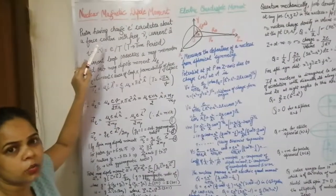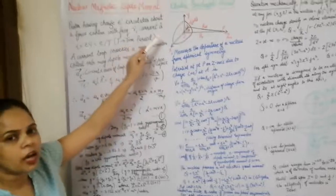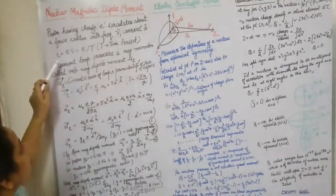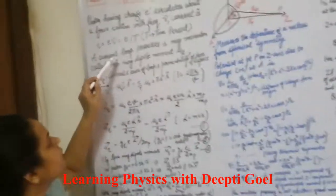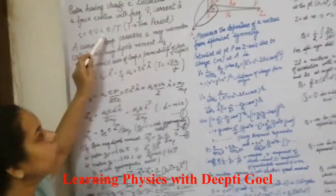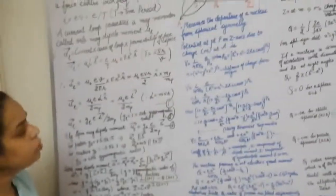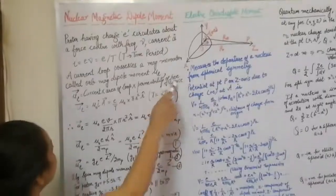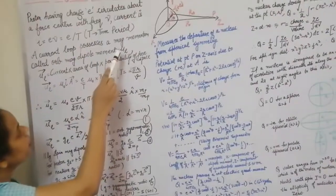Here we consider the proton having a charge of positive e, circulating about the nucleus with frequency ν. The current is given by charge upon time period: I = e/T. Since one over time period equals frequency, we say I = eν.